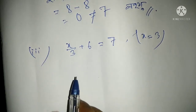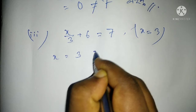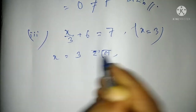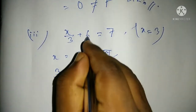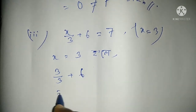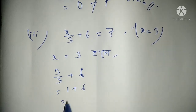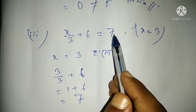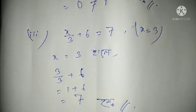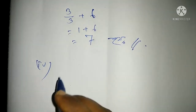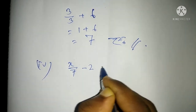x equal to 3. We are going to verify: 3 by 3 plus 6. 3 by 3 is 1, plus 6 equal to 7. And we are going to check x squared equal to 0.